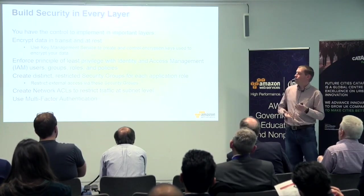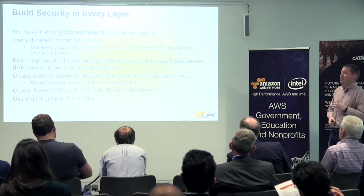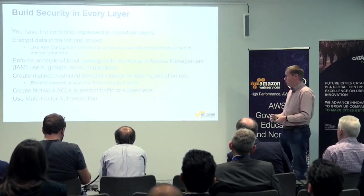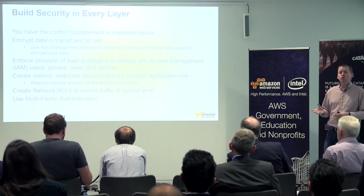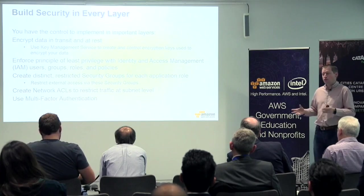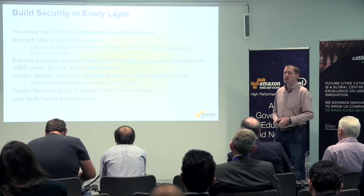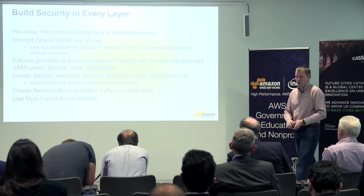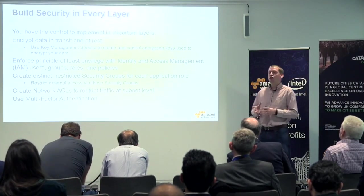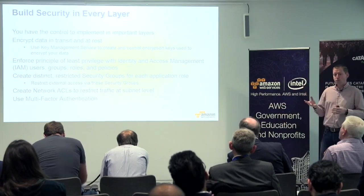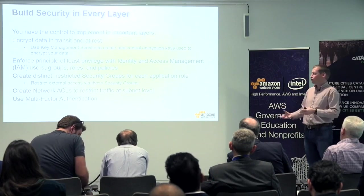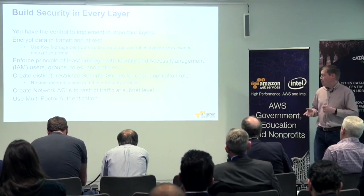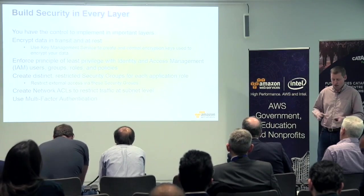You have control to implement important layers. You can control encryption for data in transit and at rest. We have a Key Management Service to allow you to manage your own encryption keys and rotate those as needed. We have a very granular IAM — Identity and Access Management — service that allows you to give specific users permissions for particular parts of AWS. That can be as granular as only being able to access a certain server on a particular day at a particular time from a certain IP address if you've authenticated using two-factor authentication. We also allow security groups, which you can think of as firewalls applied to every instance, so you can control exactly which services can talk to which service.